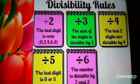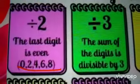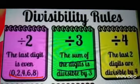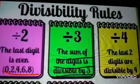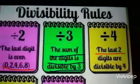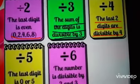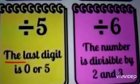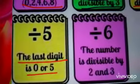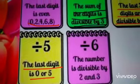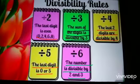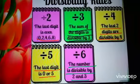Now we will summarize the divisibility rules. In the divisibility test of 2, the ones place should be 0, 2, 4, 6, or 8. In the divisibility test of 3, the sum of the digits must be divisible by 3. In the divisibility test of 4, the last two digits — that means the ones and tens place — must be divisible by 4. In the divisibility test of 5, the last digit must be 0 or 5. In the divisibility test of 6, the number must be divisible by both 2 and 3. If it is divisible by only one of them, then it will not be divisible by 6.